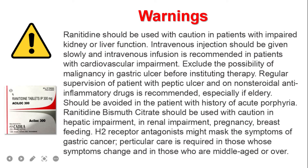Warnings: Ranitidine should be used with caution in patients with impaired kidney or liver function. Intravenous injection should be given slowly, and intravenous infusion is recommended in patients with cardiovascular impairment. Exclude the possibility of malignancy in gastric ulcer before instituting therapy. Regular supervision of patients with peptic ulcer on non-steroidal anti-inflammatory drugs is recommended, especially if elderly. Ranitidine bismuth citrate should be used with caution in hepatic impairment, renal impairment, pregnancy, and breastfeeding. H2 receptor antagonists might mask the symptoms of gastric cancer; particular care is required in those whose symptoms change and in those who are middle-aged or over.